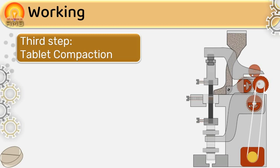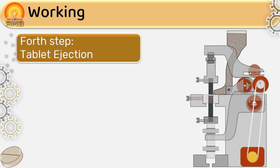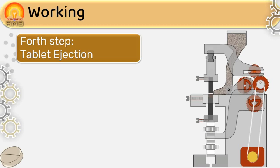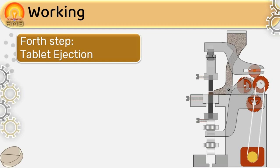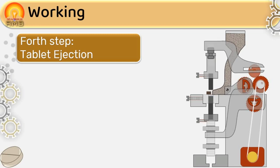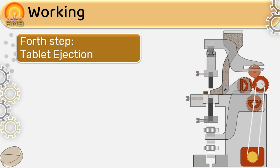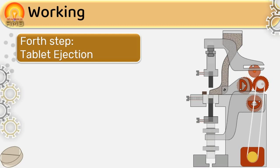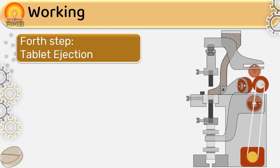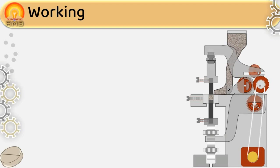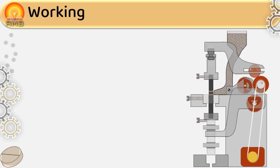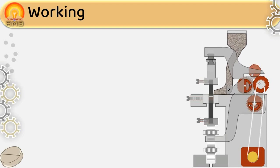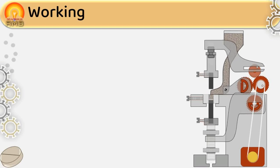The next step is tablet ejection. The upper and lower punches move up — the lower punch rises to the surface of the die to eject the tablet, and the upper punch rises upward to allow movement of the hopper shoe. The hopper shoe again moves forward over the die, pushing the newly formed tablet aside. Then the lower punch drops and the cycle is repeated. This is the working of the single punch tablet machine.